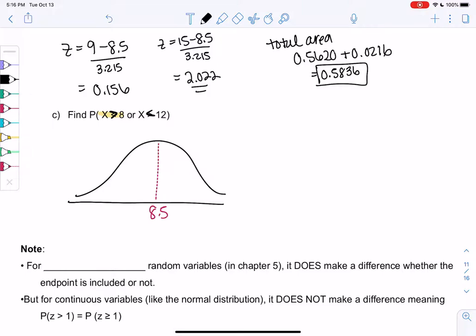So greater than 8 will be anything greater than 8, so to the right of 8. I'll shade everything to the right. Or less than 12.